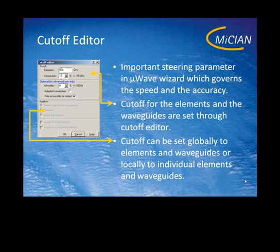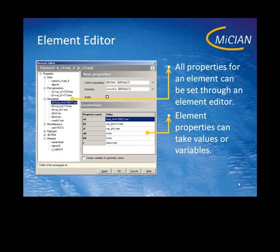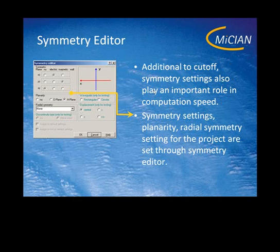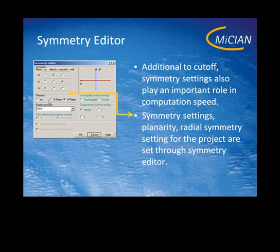It allows you to connect sections that have different symmetry sections. Below the cutoff computation setting of the iris, you find the symmetry setting of the iris. When you double click on the ellipsis, the symmetry editor will appear. Here you can set the symmetry planes, for example the XZ plane, YZ, XY plane, or the planarity in case of a rectangular waveguide, or the radial symmetry in case of a coaxial or circular waveguide.